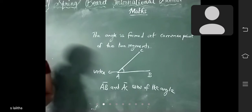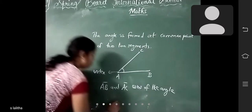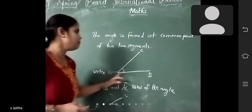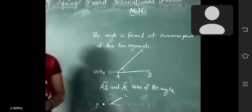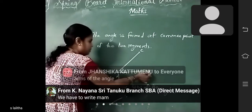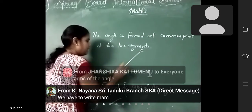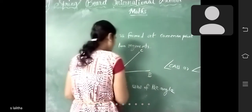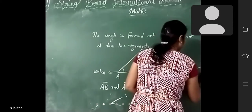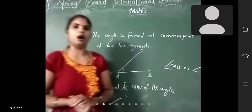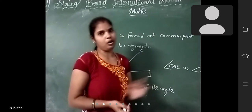And what is the symbol of an angle? You should write like this — this is the symbol of angle. And what is the name of this angle? How to name this angle? You can name it as angle CAB or angle BAC. You should write the vertex in the middle only — always write the vertex in the middle.